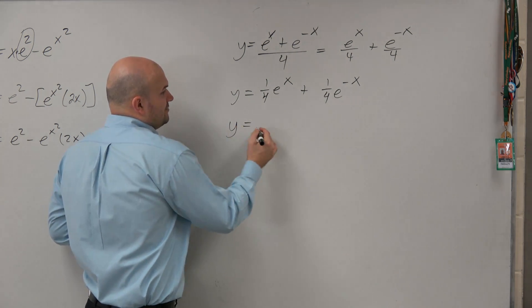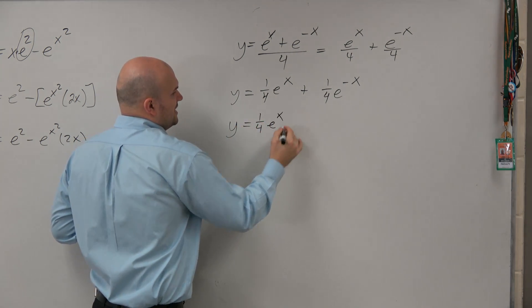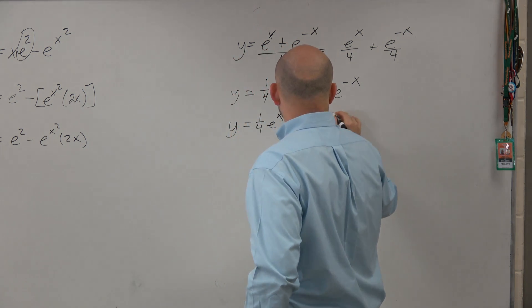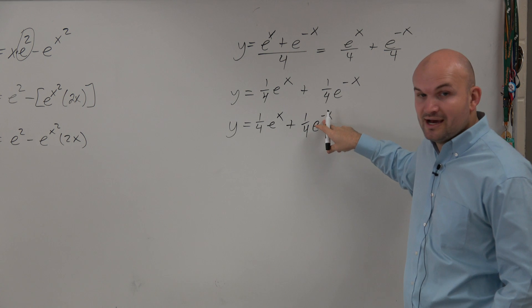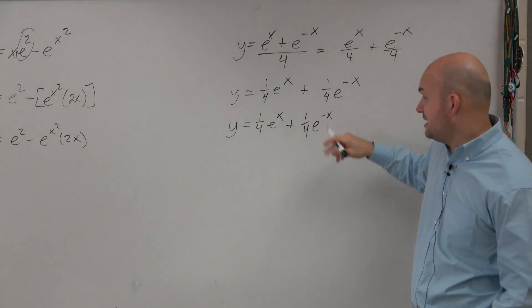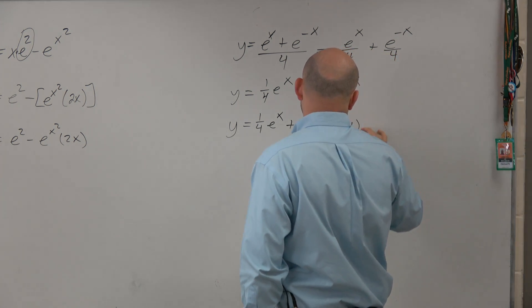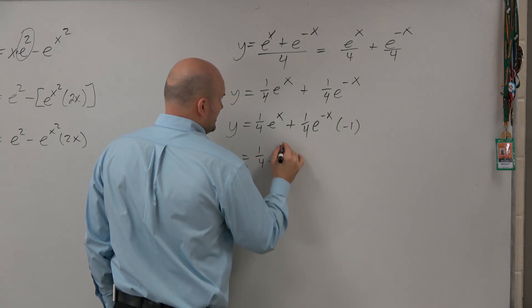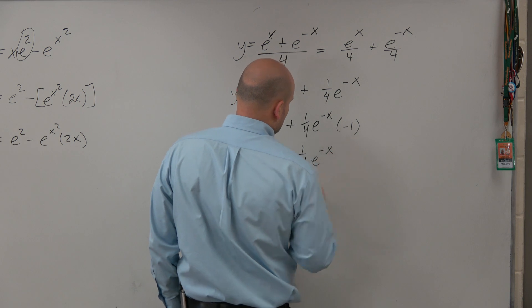So in this case, we have y equals 1 fourth e to the x plus 1 fourth e to the negative x. But be careful here. Now I have to take the derivative of my negative x, which is equal to negative 1. So y prime equals 1 fourth e to the x minus 1 fourth e to the negative x.